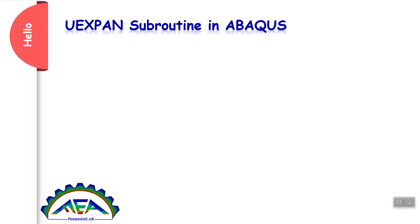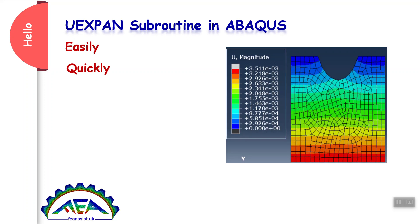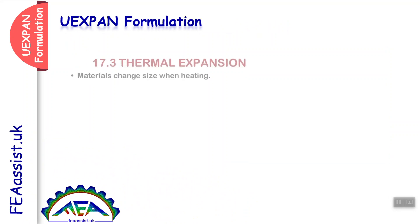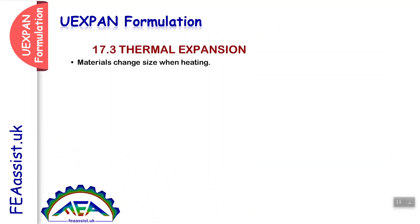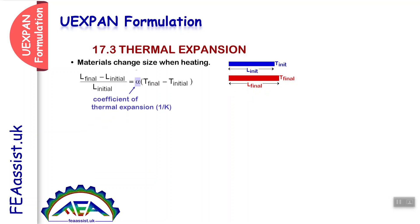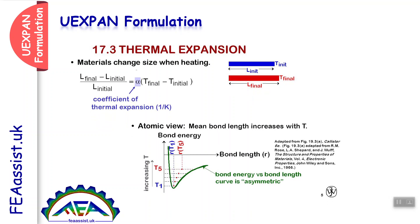Hello, you want to learn UXPAN subroutine in Abacus easily and quickly. UXPAN is a subroutine to define thermal expansion in Abacus. Materials change size when heating — if you increase the temperature, the length will increase. This depends on the coefficient of thermal expansion. At the atomic level, the interatomic frequency distance increases by heating, and this is the reason for thermal expansion.